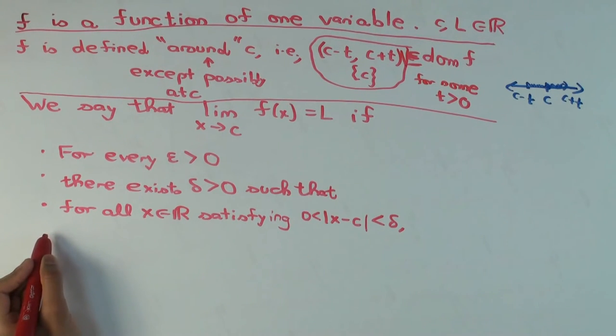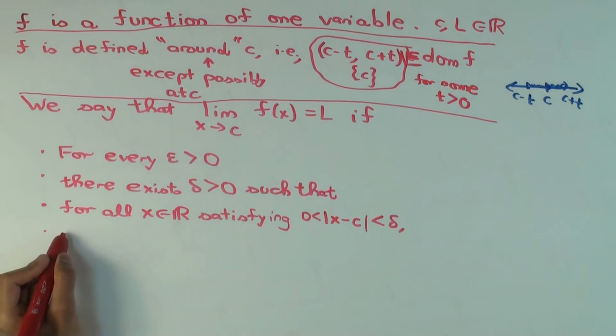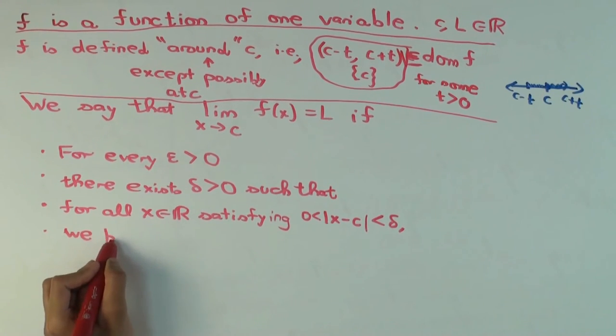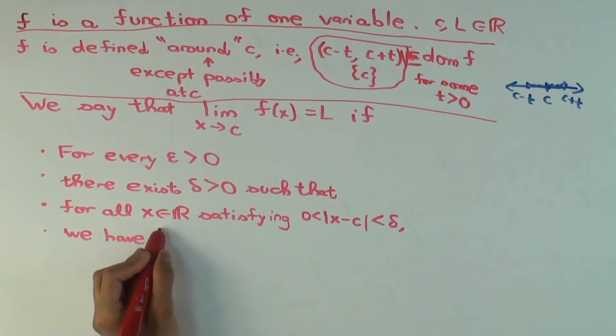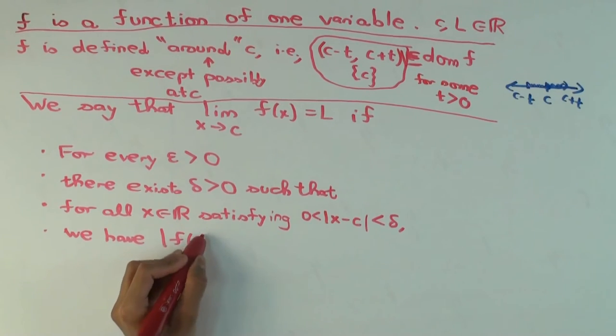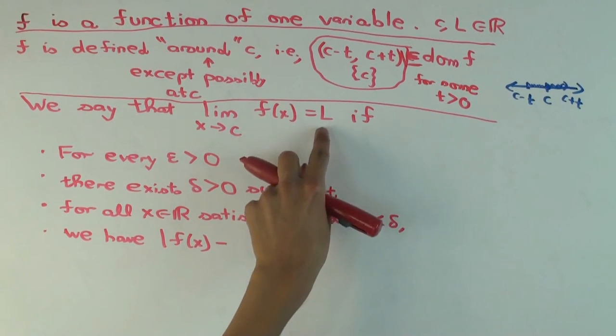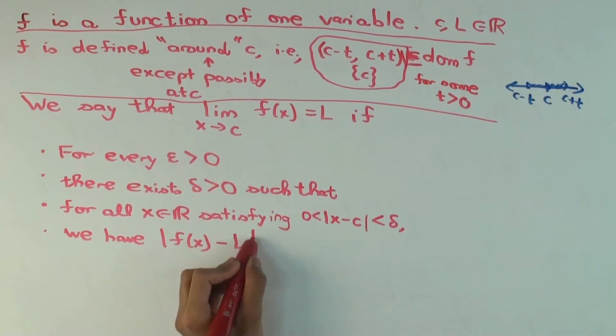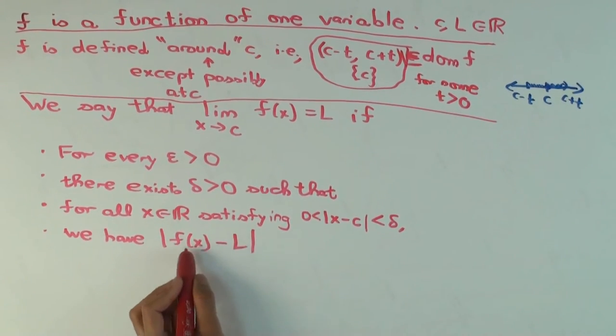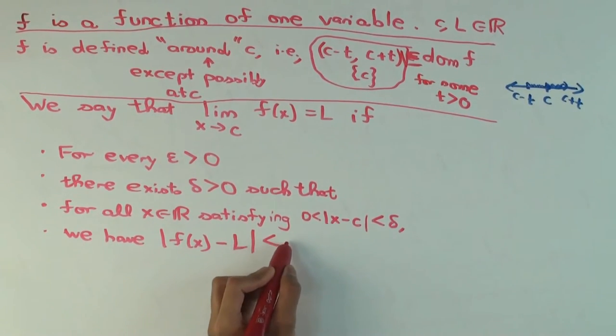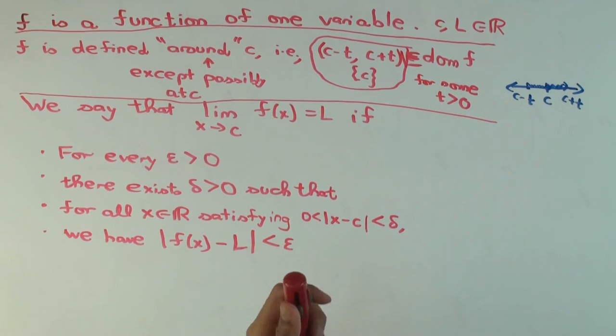What do we have? We have the absolute value of f(x) minus the claimed limit, which is L. You're thinking of continuity, which is a little bit different, but here we have absolute value of f(x) minus L less than epsilon. Excellent.